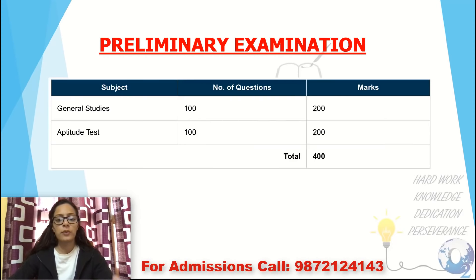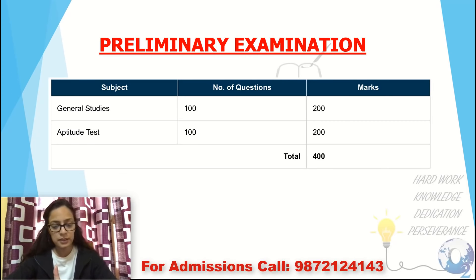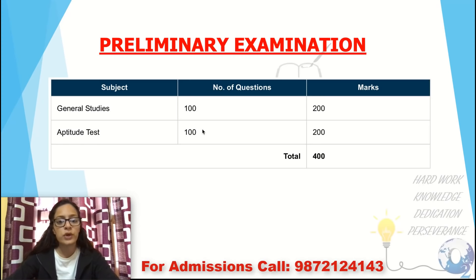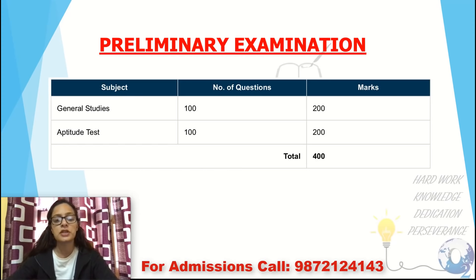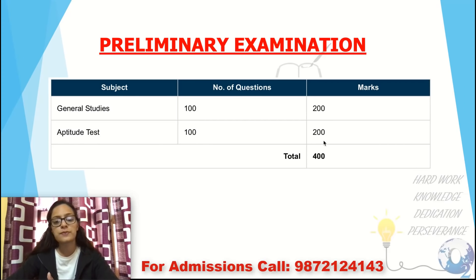Now let's look at the Preliminary Examination in detail. The number of questions is 100, and each question carries 2 marks, making it 200 marks total. Remember that the Preliminary exam marks are not counted in the final merit. The Aptitude section is qualifying in nature — you need 33% marks to qualify it, after which the General Studies paper is checked.